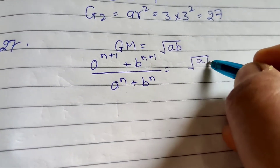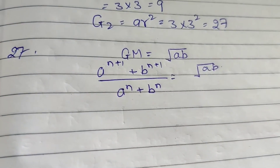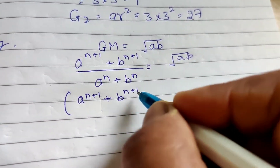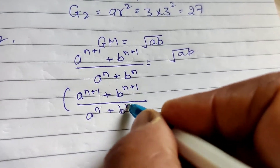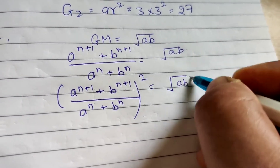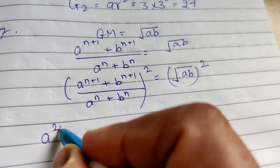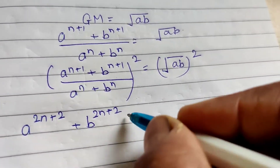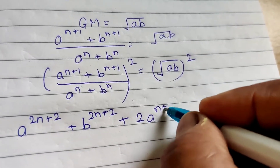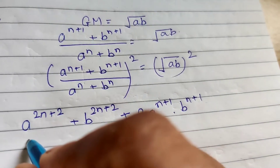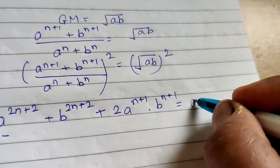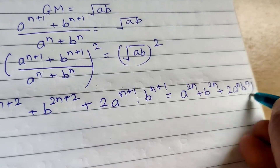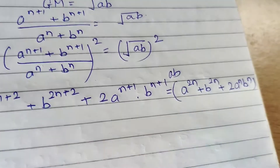Squaring both sides: (a^(n+1) + b^(n+1))² equals (root(ab))², which gives a^(2n+2) + b^(2n+2) + 2·a^(n+1)·b^(n+1) on the left. Cross multiplying, the denominator side gives a^(2n) + b^(2n) + 2·a^n·b^n, and the right side becomes ab.